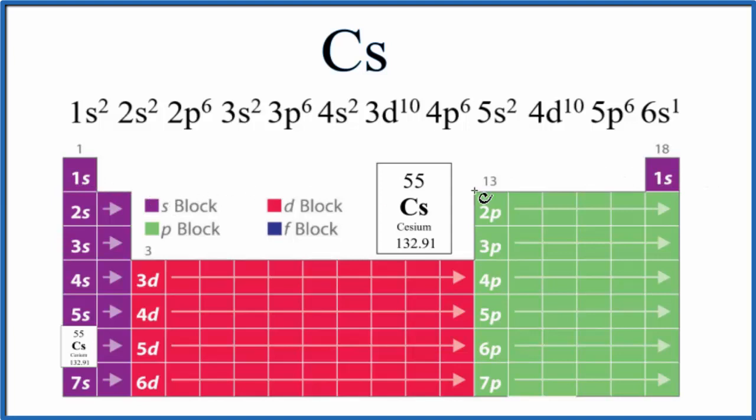S orbitals can hold up to two valence electrons, so we have our 1s2. Then we go to 2s1, 2s2. That's full. Then we go to the p. P's can hold up to 6. We have 2p1, 2, 3, 4, 5, and 6. That's our 2p6.